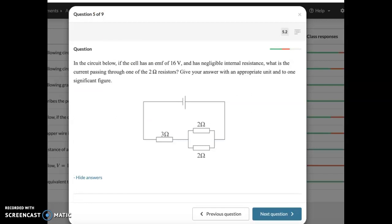Question 5. In the circuit below, the cell has an EMF of 16 volts and negligible internal resistance. What is the current passing through one of the two ohm resistors? Now, when you look at this circuit, the first thing to notice is that the two resistors here are the same, which means that the current will split evenly. Which is nice, because it means that if you can work out the current here, you can split it into two. Just divide by two. So how do we do that? For that, you need to work out the total resistance.